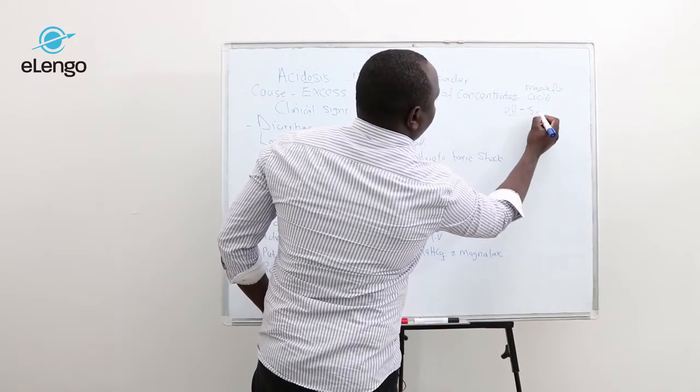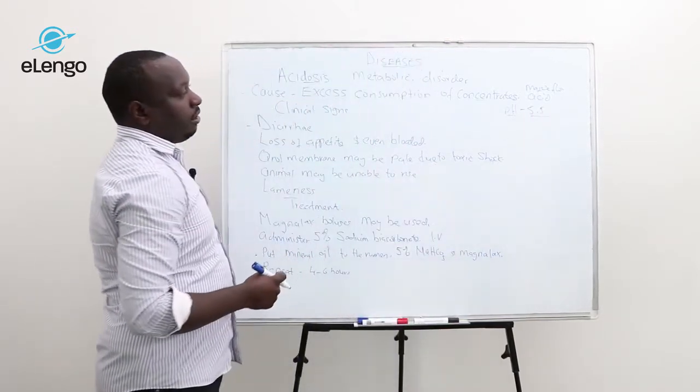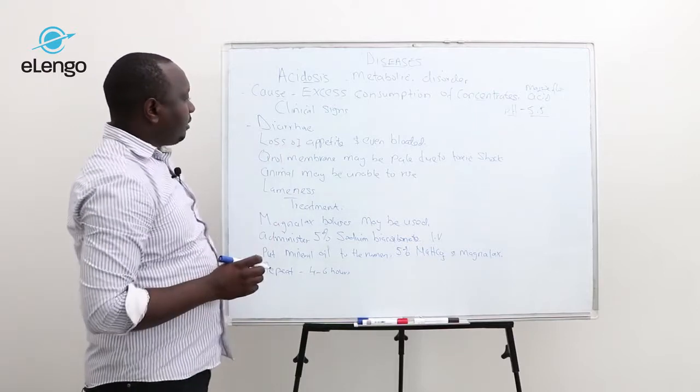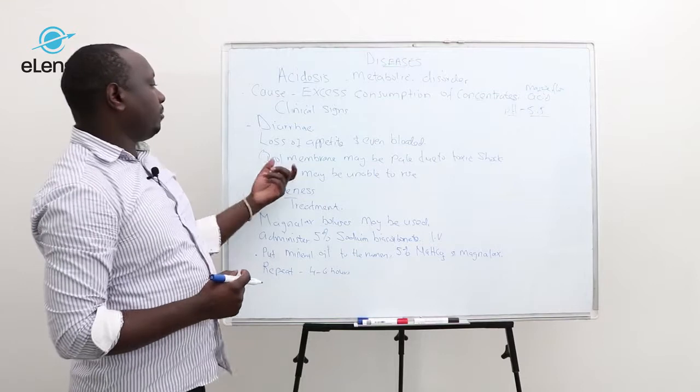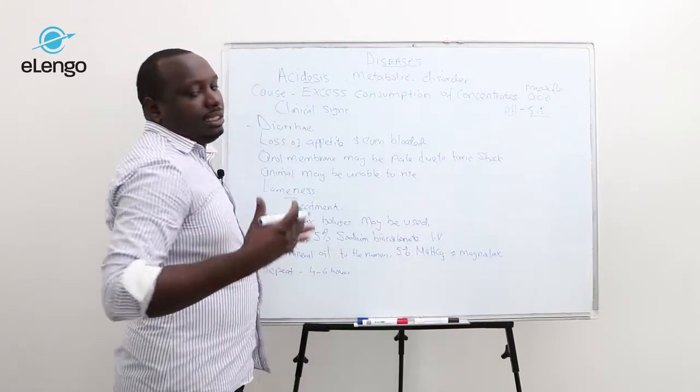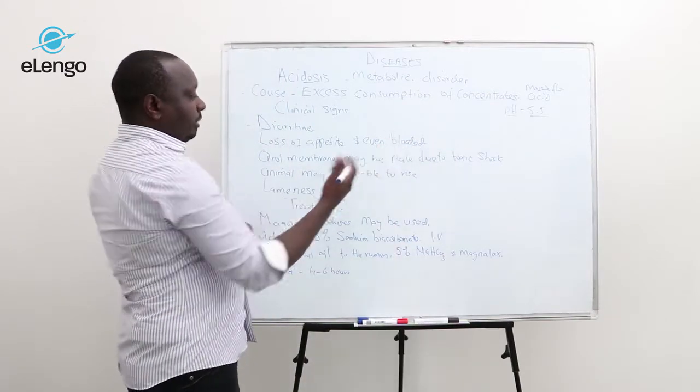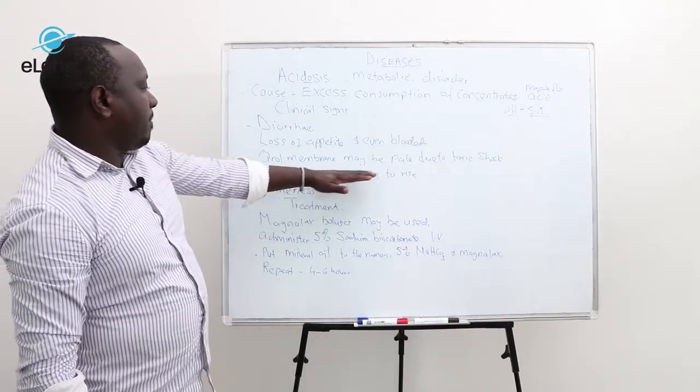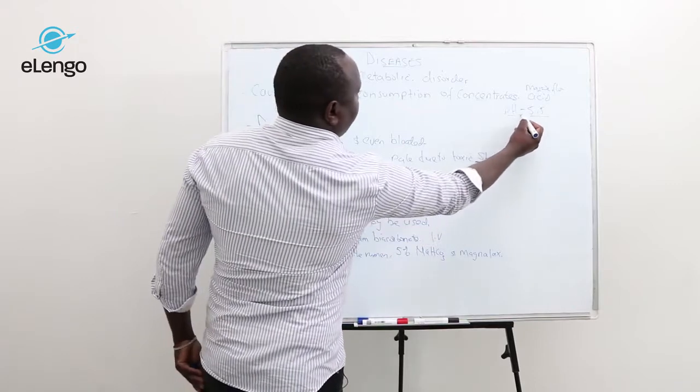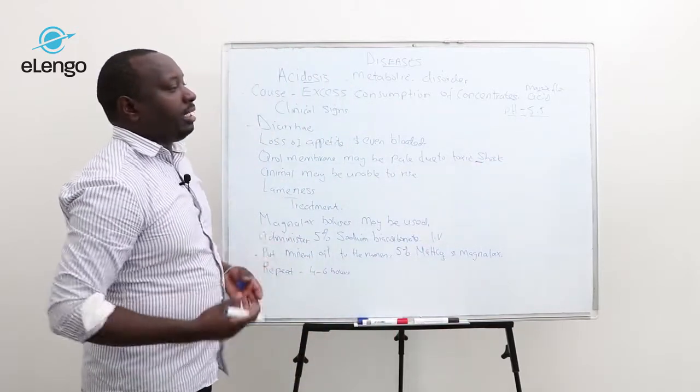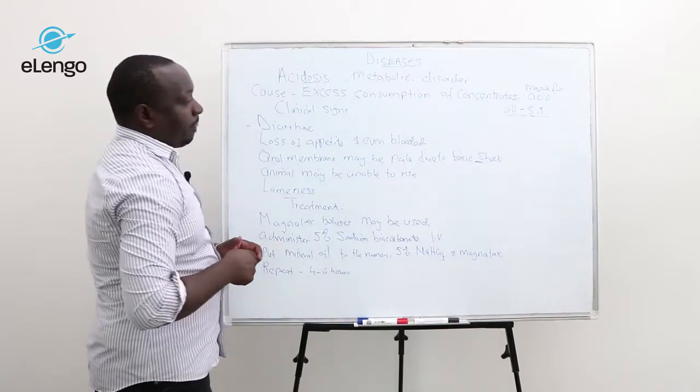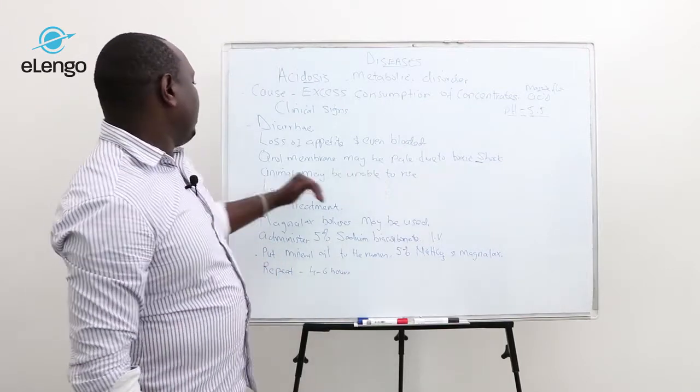Clinical signs include diarrhea, loss of appetite, and bloating. Bloating is excess gases within the rumen. The oral membrane may be pale due to toxic shock. When pH increases, the body absorbs a lot of acid, which becomes toxic to the entire body. This can be seen from the pale oral membrane.